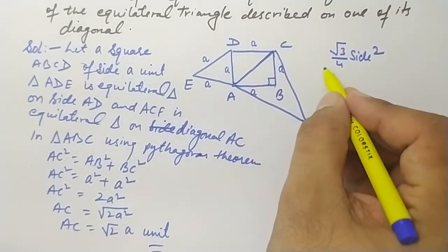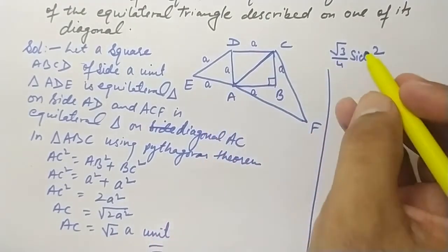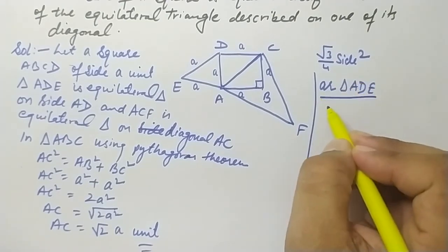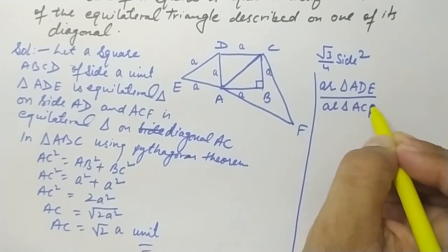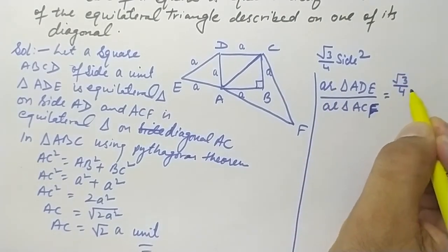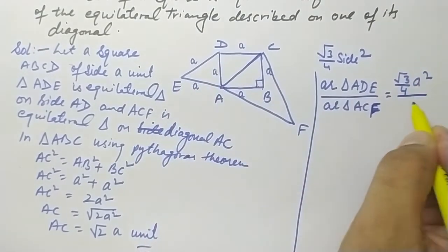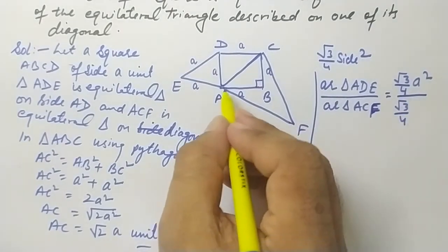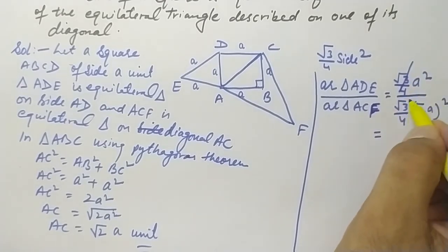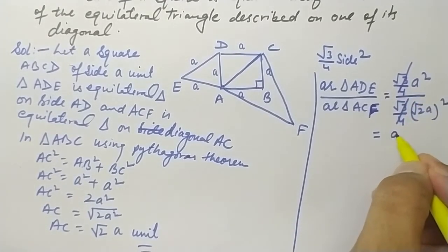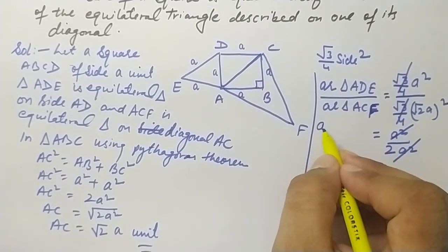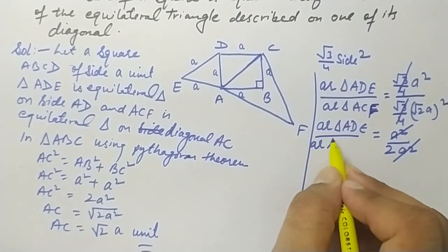Now we find the ratio of their areas. Area of triangle ADE = (√3/4) × a². Area of triangle ACF = (√3/4) × (√2·a)² = (√3/4) × 2a². Taking the ratio: Area(ADE) / Area(ACF) = [(√3/4) × a²] / [(√3/4) × 2a²]. The (√3/4) cancels, and a² cancels, giving 1/2.